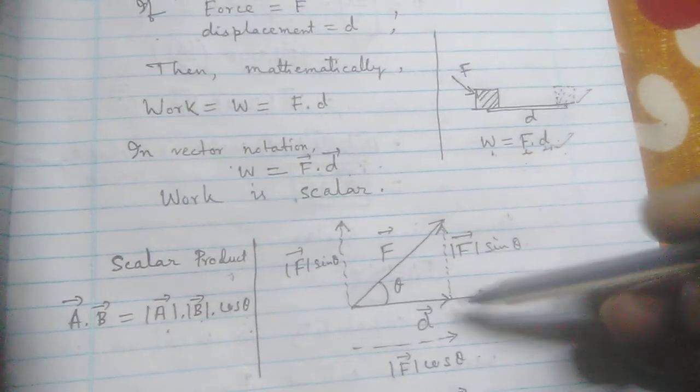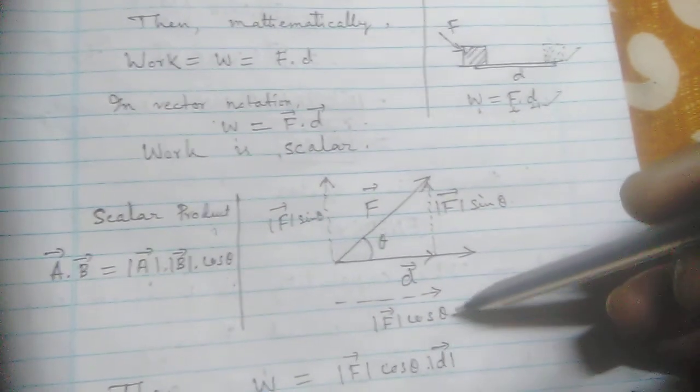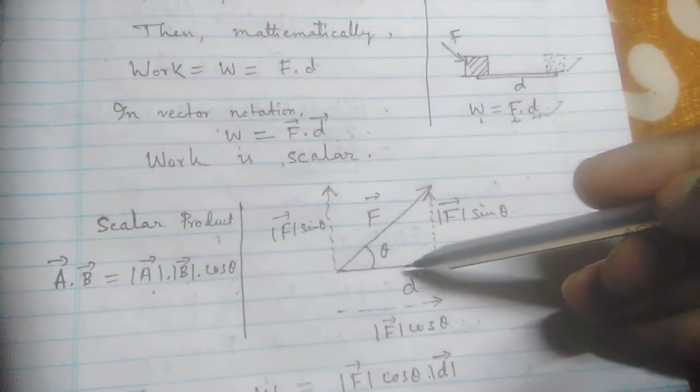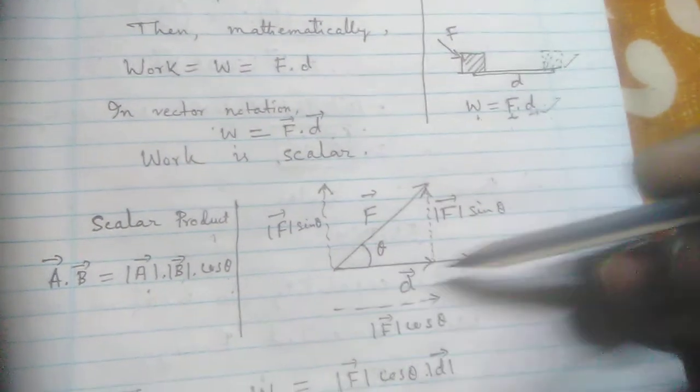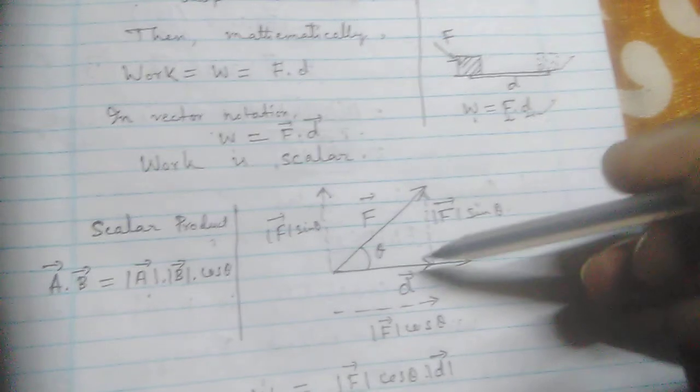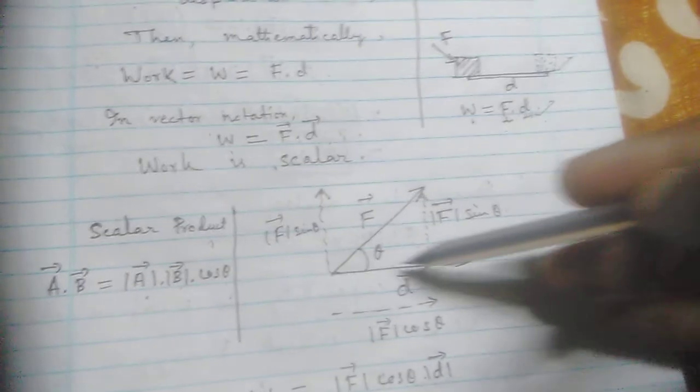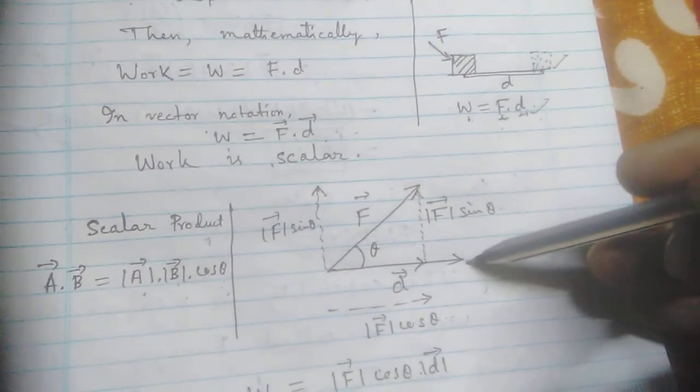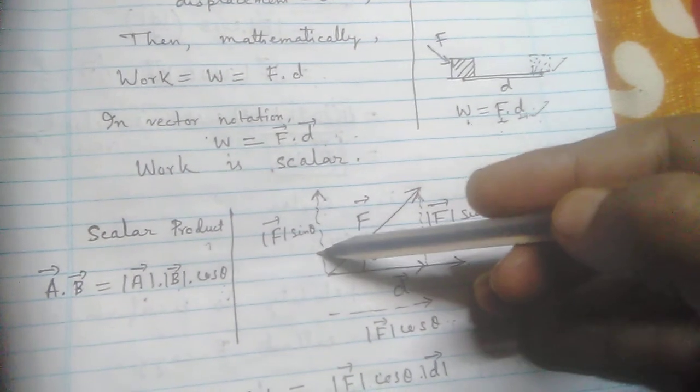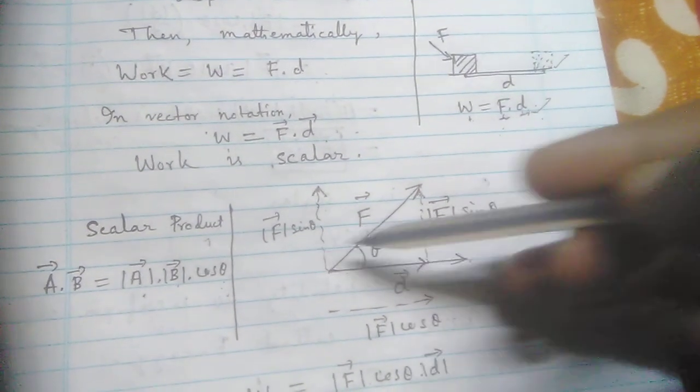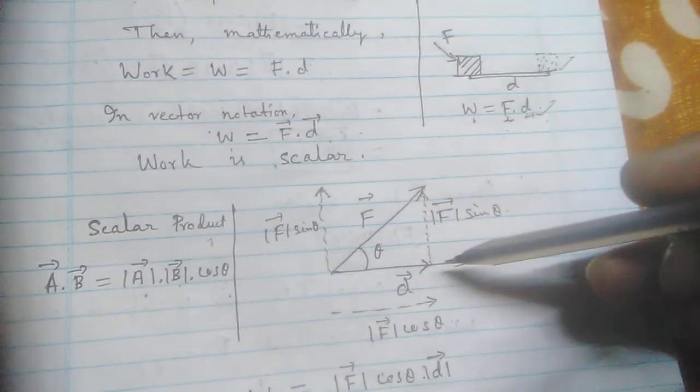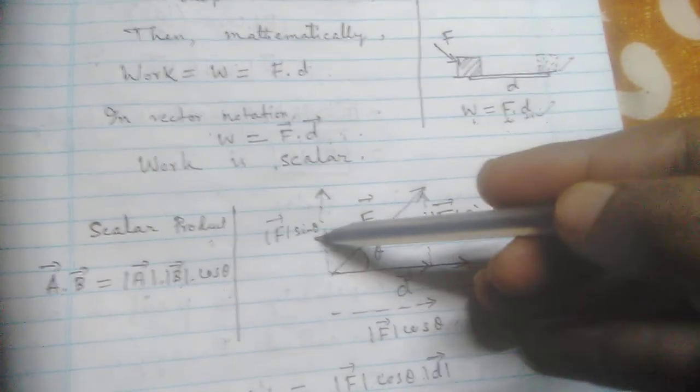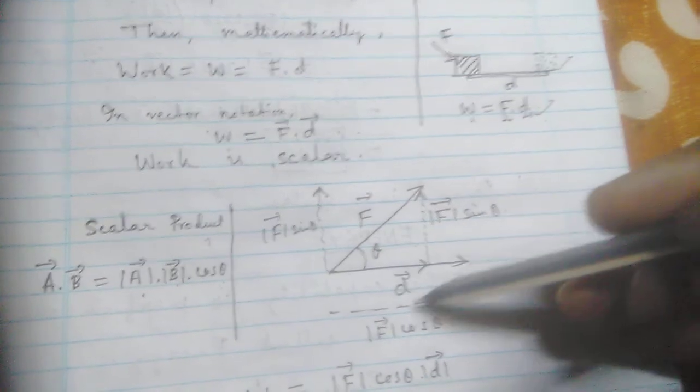horizontal component is modulus of F cos theta. You will have to note that when we do scalar product we have to take the same direction. But when we do vector cross multiplication then we take the perpendicular components. So we are not doing cross multiplication but scalar multiplication. So we will